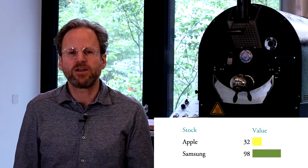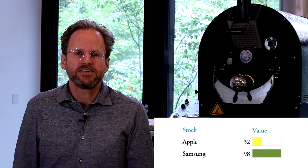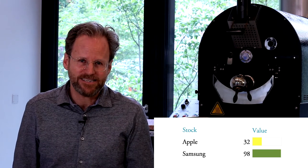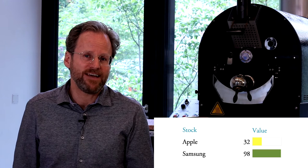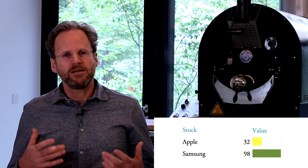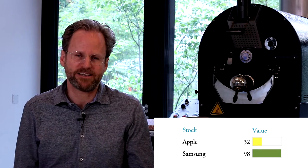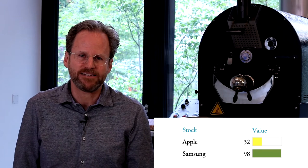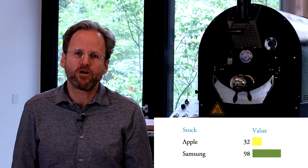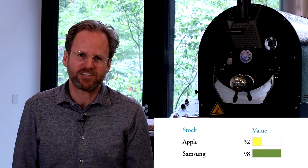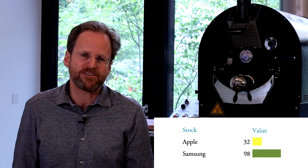What you need is the Obermott value rank. The value rank relates the share price to the size of the company. When we look at the Obermott value ranks, the value rank of Samsung is 98 and the value rank of Apple is 32. That means Samsung has to outperform only two percent of its competitors, while Apple has to outperform 68 percent of their competitors.